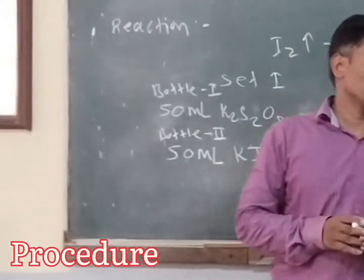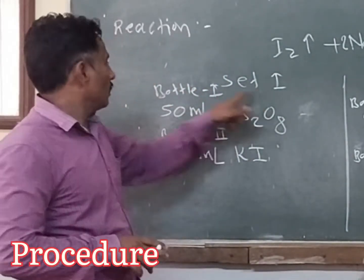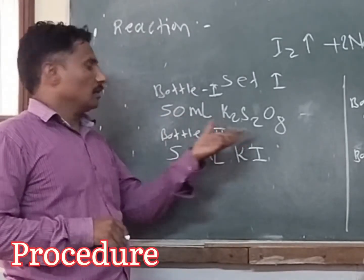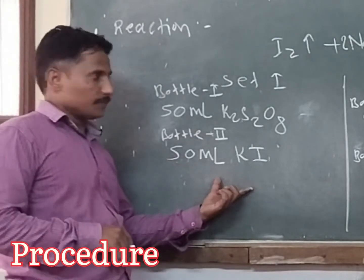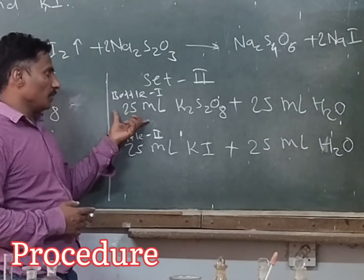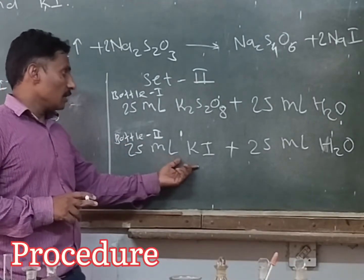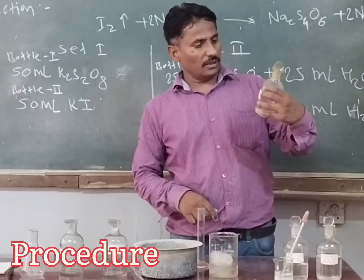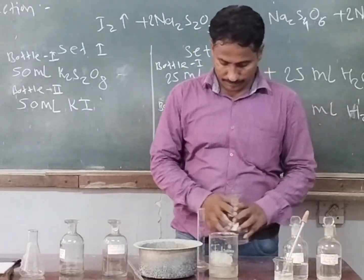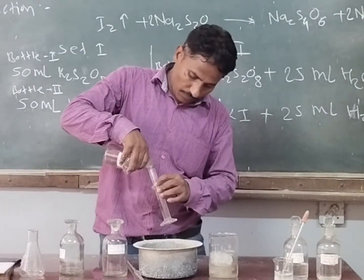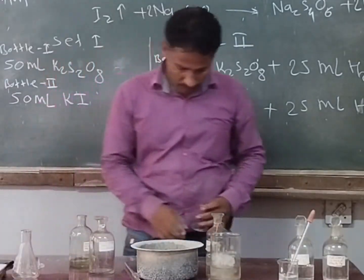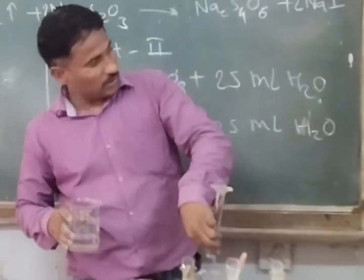In this experiment there are two sets. In Set 1: bottle 1 contains 50 ml of potassium persulfate, and bottle 2 contains 50 ml of potassium iodide. In Set 2: bottle 1 contains 25 ml of potassium persulfate, and bottle 2 contains 25 ml of potassium iodide. Fill the burette with sodium thiosulfate solution.